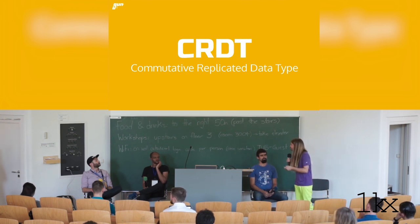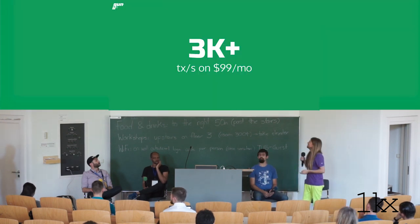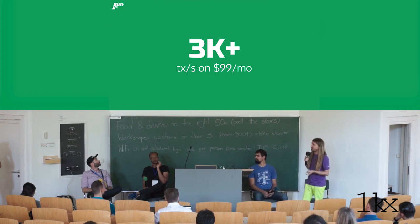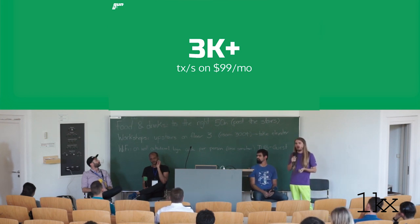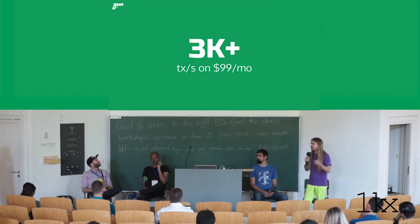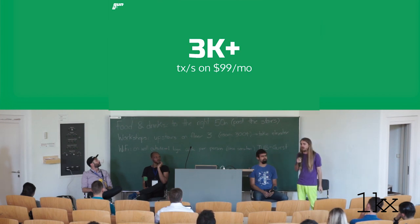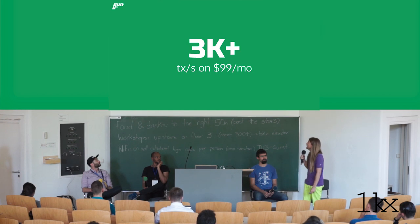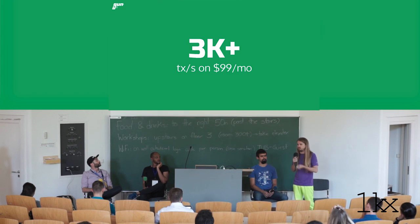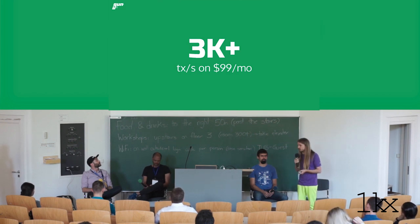There are a bunch of different CRDT types. Last year we did about 3,000 transactions per second in production on a site called notabug.io, which is a peer-to-peer version of Reddit. The total cost was less than $99. Today I'm pretty sure we can do a lot more than that at a lower cost.